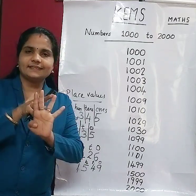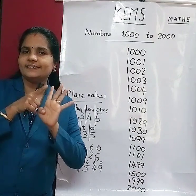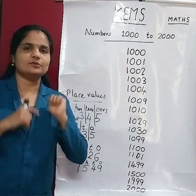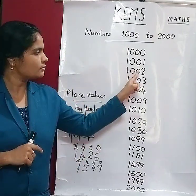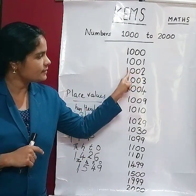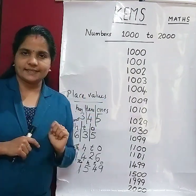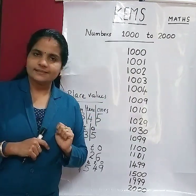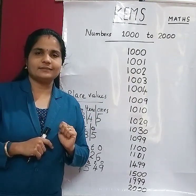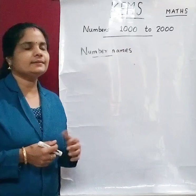This is the 4-digit numbers having 4 place values: 1s, 10s, 100s, and 1000s. Clear.